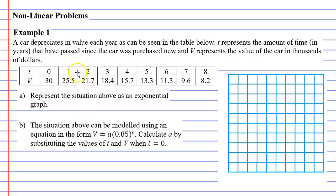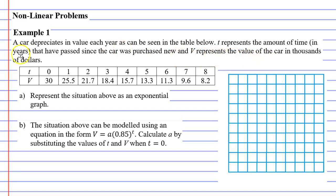I'm only going to complete one example for you. This example relates to an exponential function. It says that a car depreciates in value each year, as can be seen in the table below. T represents the amount of time in years that have passed since the car was purchased new, and V represents the value of the car in thousands of dollars. We can see this in the table here.